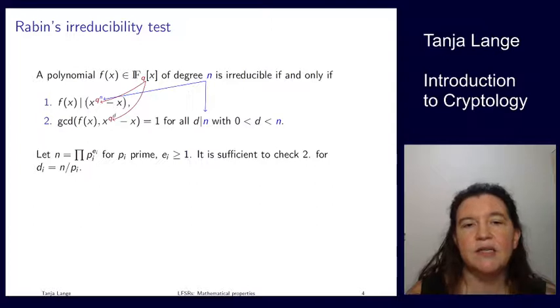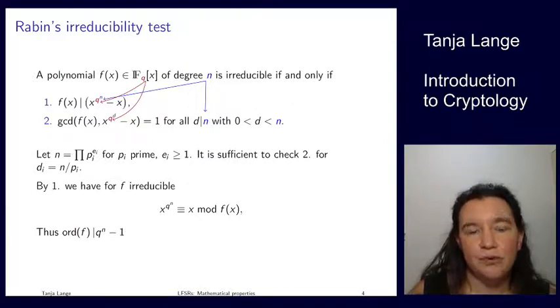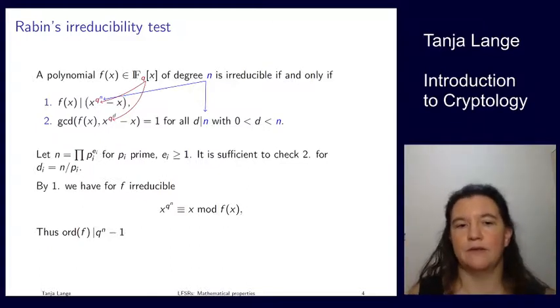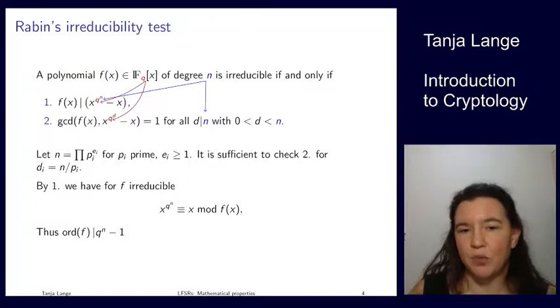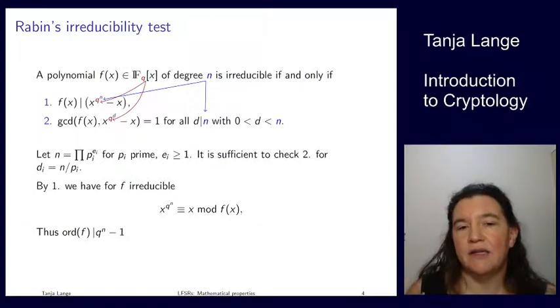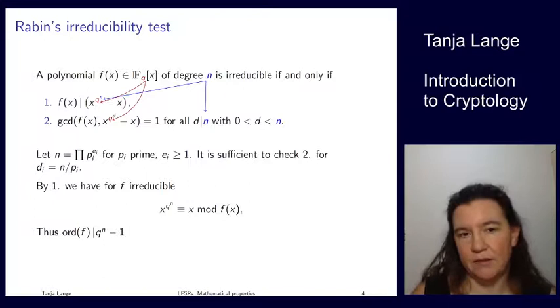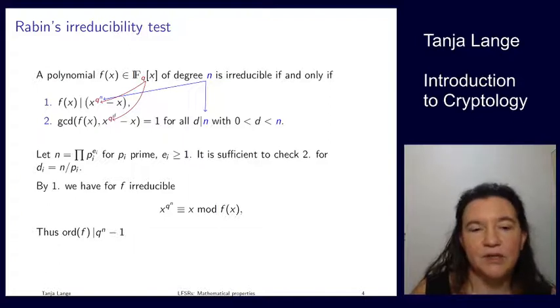Now, the reason I repeat this here is that it gives us an idea of what to check for when we're looking for periods or for the orders. So if F is irreducible, that means F divides x to the q to the n minus x. So let's split this up. So then we have x to the q to the n is congruent to x mod f of x. And since we're asking for the order, we're not asking for a power which gives x again, but we're asking for a power which gives 1. So we divide those sides by x and we're getting that x to the q to the n minus 1 is congruent to 1 mod f of x for an irreducible f.